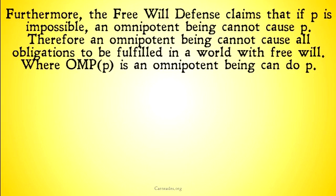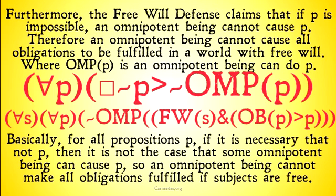Furthermore, the free will defense claims that if P is impossible, an omnipotent being cannot cause P. Therefore, an omnipotent being cannot cause all obligations to be fulfilled in a world with free will. Where OMPP means an omnipotent being can do P, we have: for all propositions P, if it is necessary that not P, then it is not the case that some omnipotent being can cause P. So we can conclude that an omnipotent being cannot make all obligations fulfilled if subjects are free, from our previous premise noting that that was not possible.